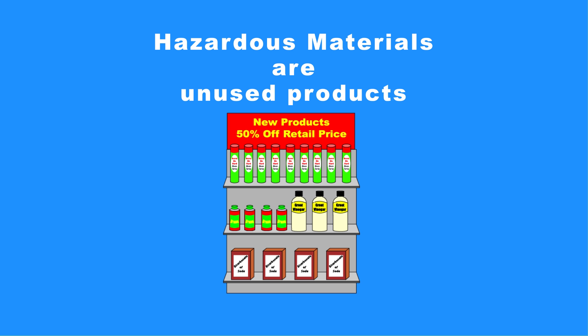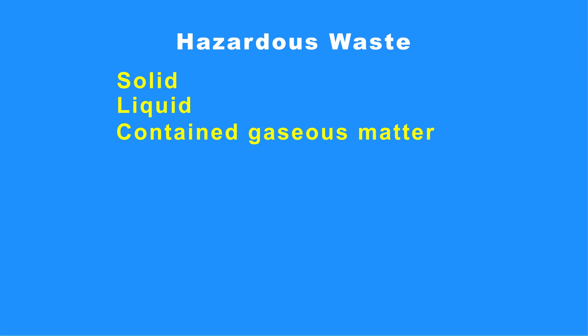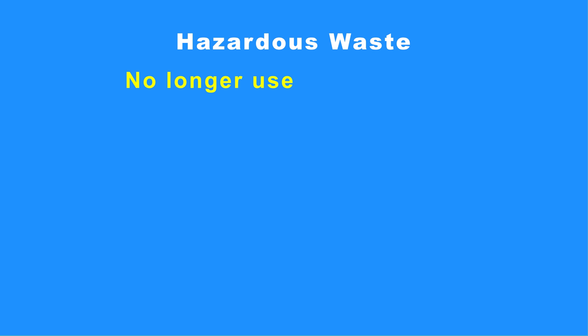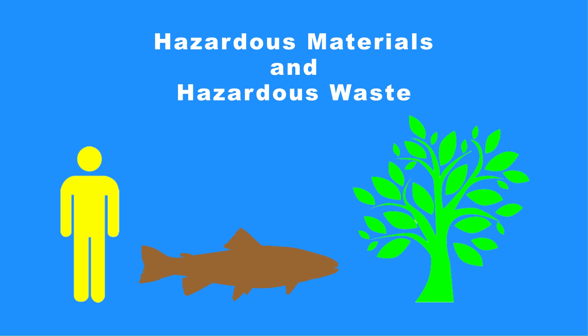Hazardous materials are unused products, while hazardous waste is any solid, liquid, or contained gaseous matter that you no longer use, or either recycle, throw away, or store until you have enough to treat or dispose of. Hazardous materials and hazardous waste have the potential to cause harm to humans, animals, or the environment.